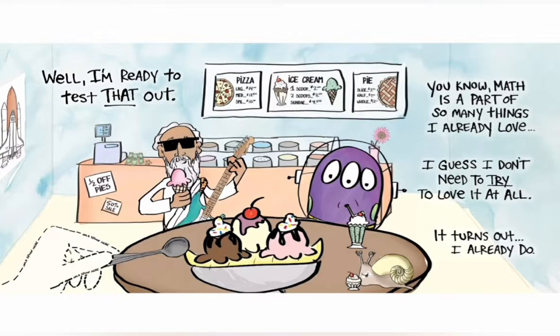And look, there's a lot of math stuff here. Look, half percent off of pies. 50% sale. Pizza: large 14, medium 12.50, small 10. Ice cream: one scoop $2.00, two scoops $3.00, sundae $4.50. Pie slice $3.50, half pie $2, whole $12. Oh my gosh, that's a lot. But because it's half off of pie, that's amazing.